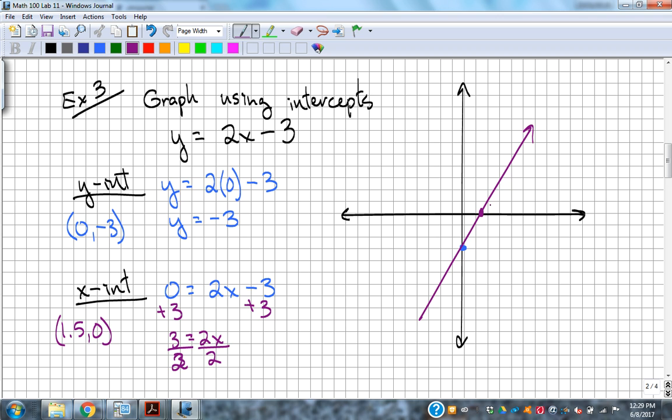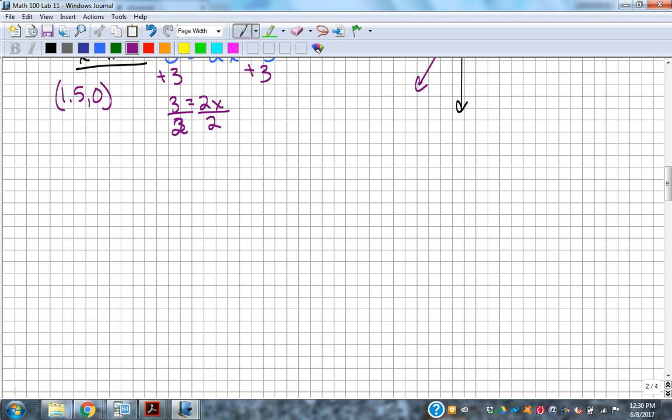If you followed the slope-intercept form of that equation and graphed it that way, putting your y-intercept at negative 3 and then going up 2 over 1, you'll notice that you do end up on that line perfectly each time. So it still works that way. But using intercepts, if you're asked to find those, plug in 0 for x to get the y-intercept, plug a 0 in for y to get the x-intercept.